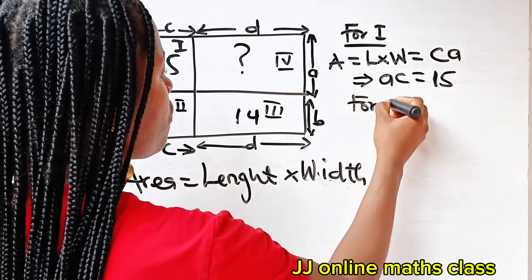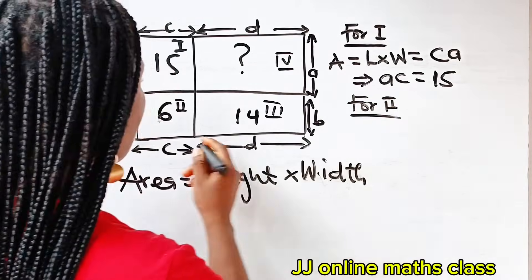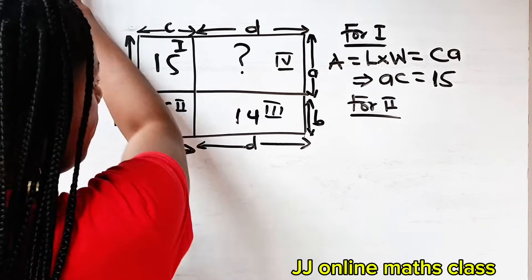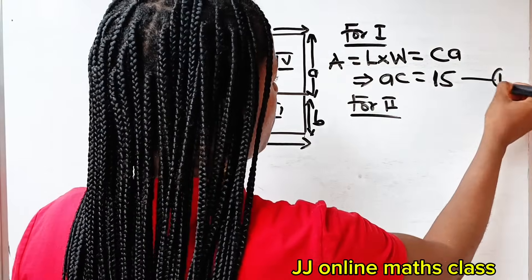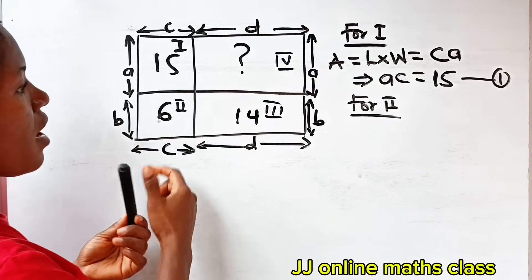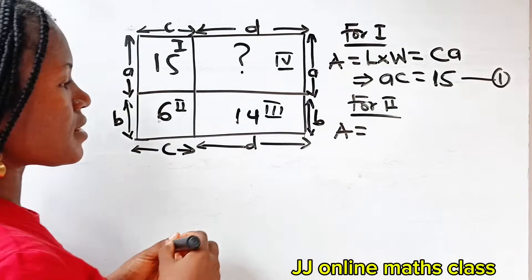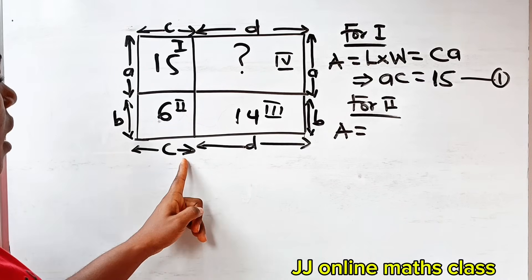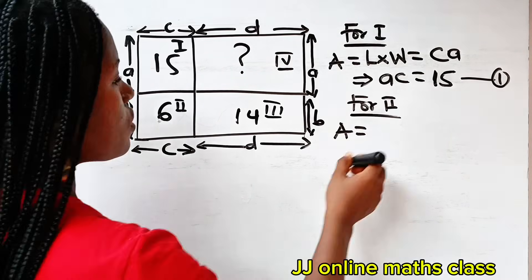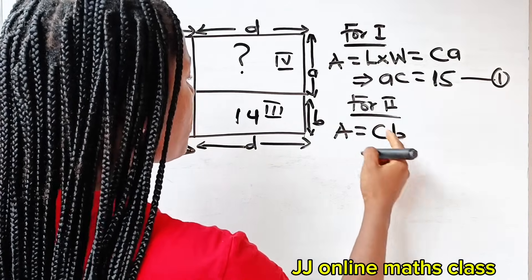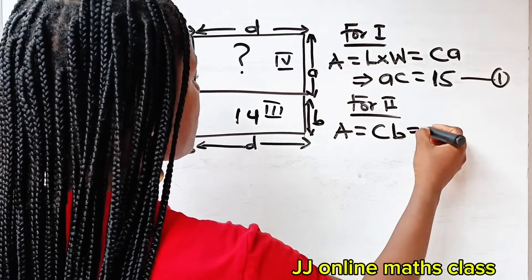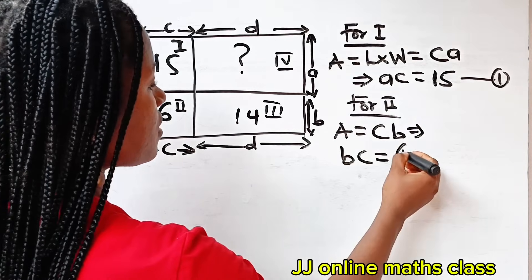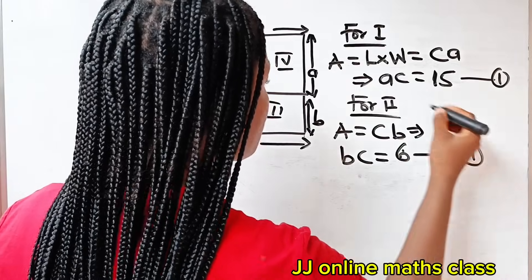For rectangle II, the area is going to be length times width, which is C times B, or BC. So this implies that BC is equal to 6. Let's call this equation 2.